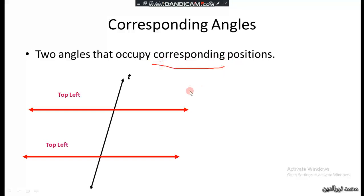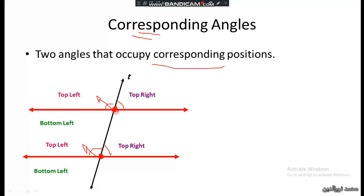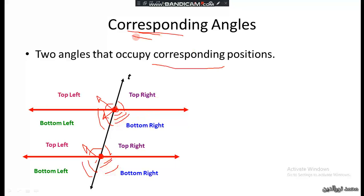If we look at this picture, we have two points of intersection. With respect to each point, we identify positions: top left and top left — this angle and this angle are corresponding. Top right and top right — these two angles are corresponding. Bottom left and bottom left — this angle and this angle are corresponding. Bottom right and bottom right — this angle and this angle are corresponding.